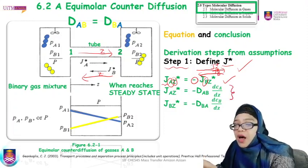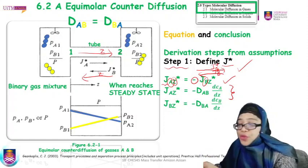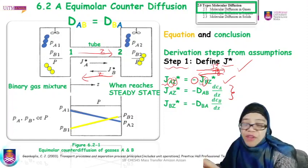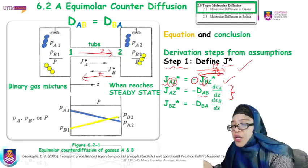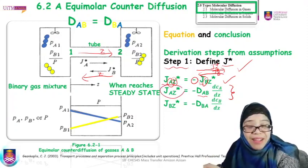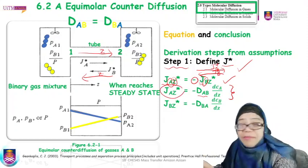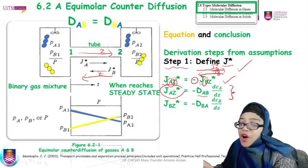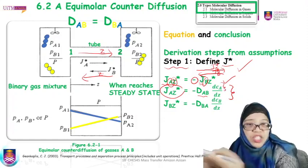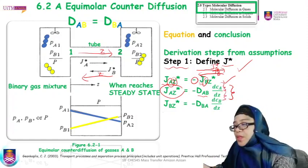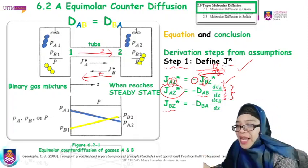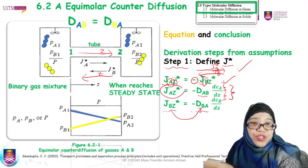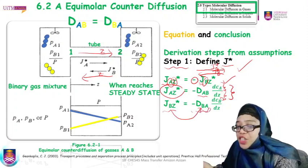From J*_Bz, we open up the equation by applying Fick's diffusion law. We know J*_Az = -DAB(dCA/dz), since it is the diffusive flux of A, influenced by the diffusivity of A through B and the change in concentration of species A in the z direction. For J*_Bz, the diffusive flux of species B, we write: J*_Bz = -DBA(dCB/dz), where DBA is the diffusivity of B through A.